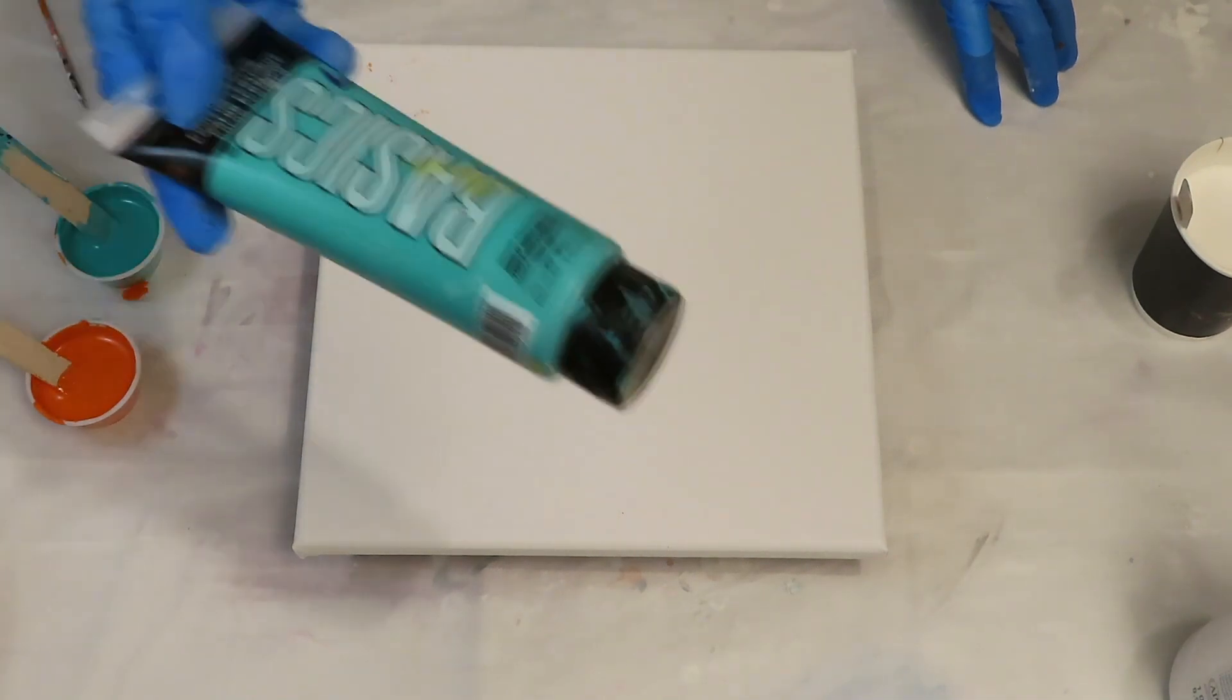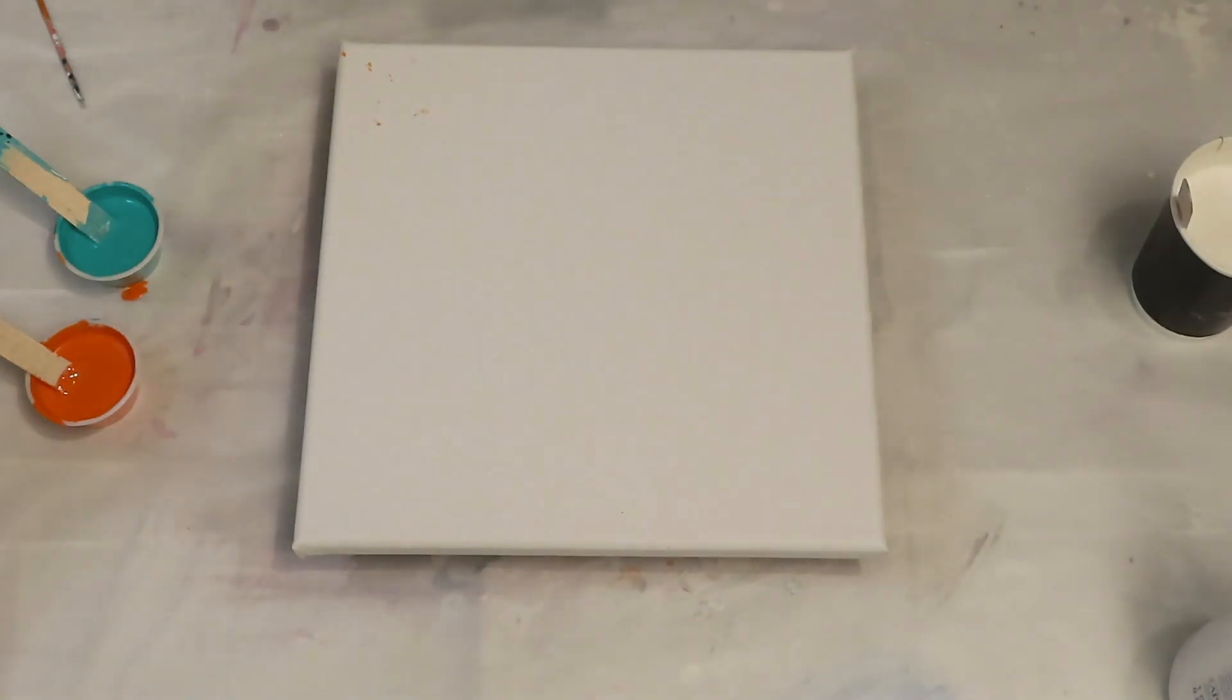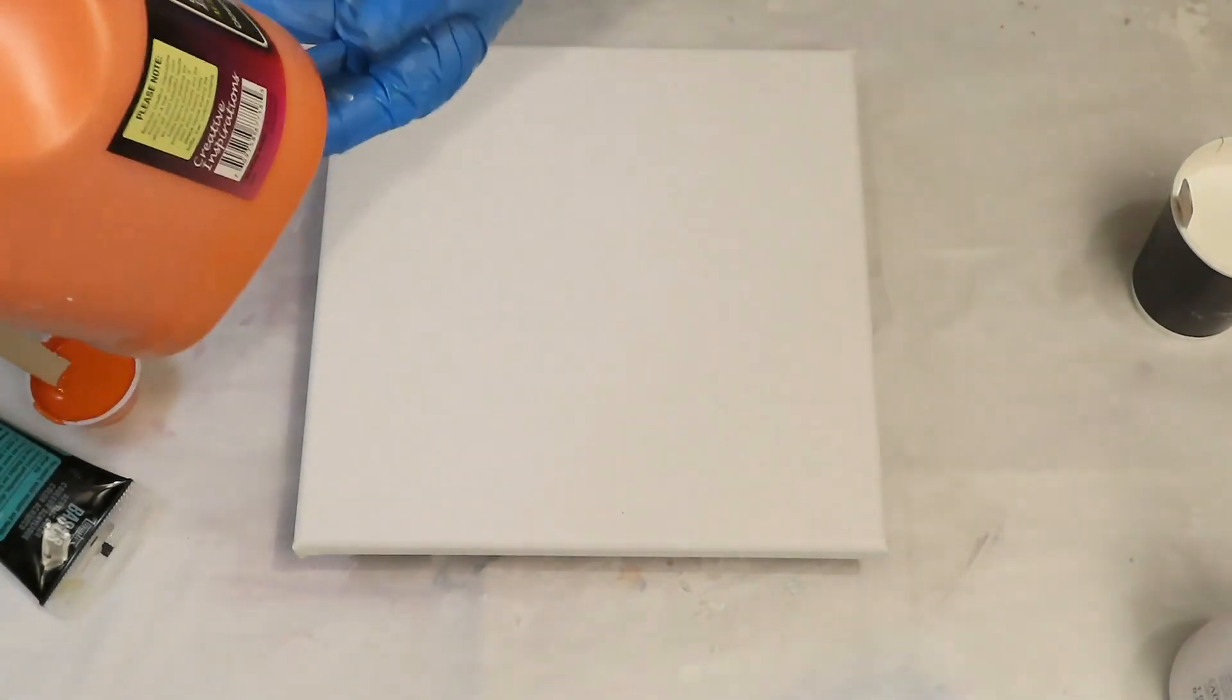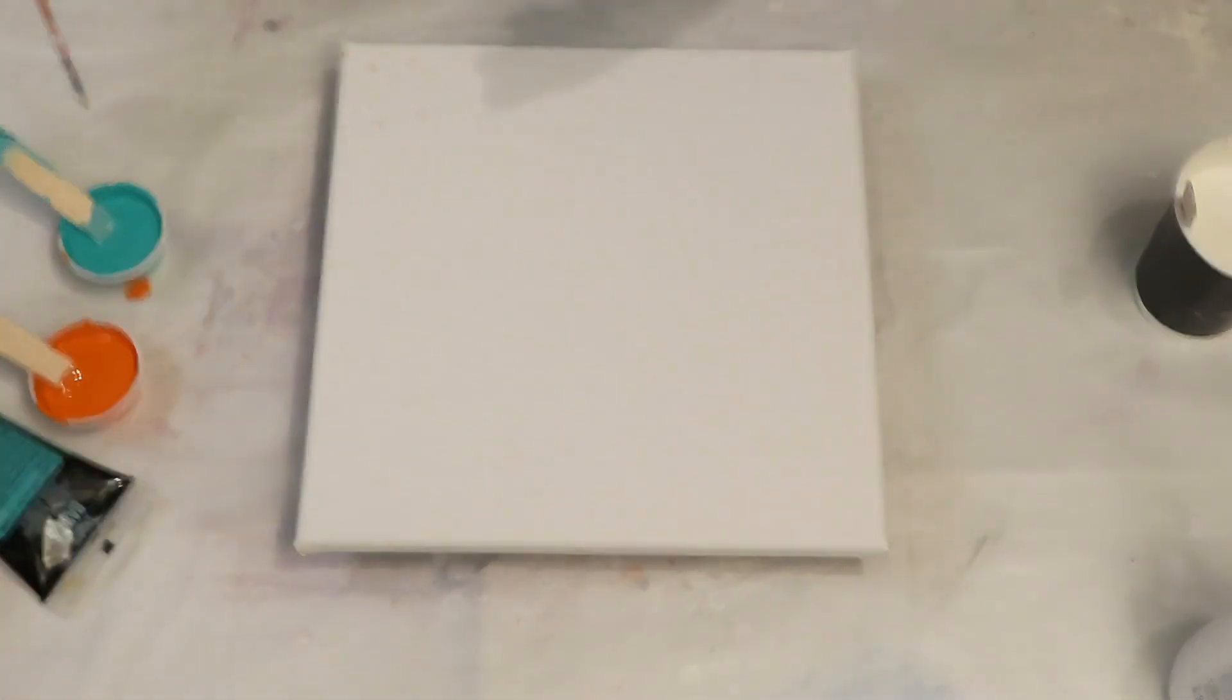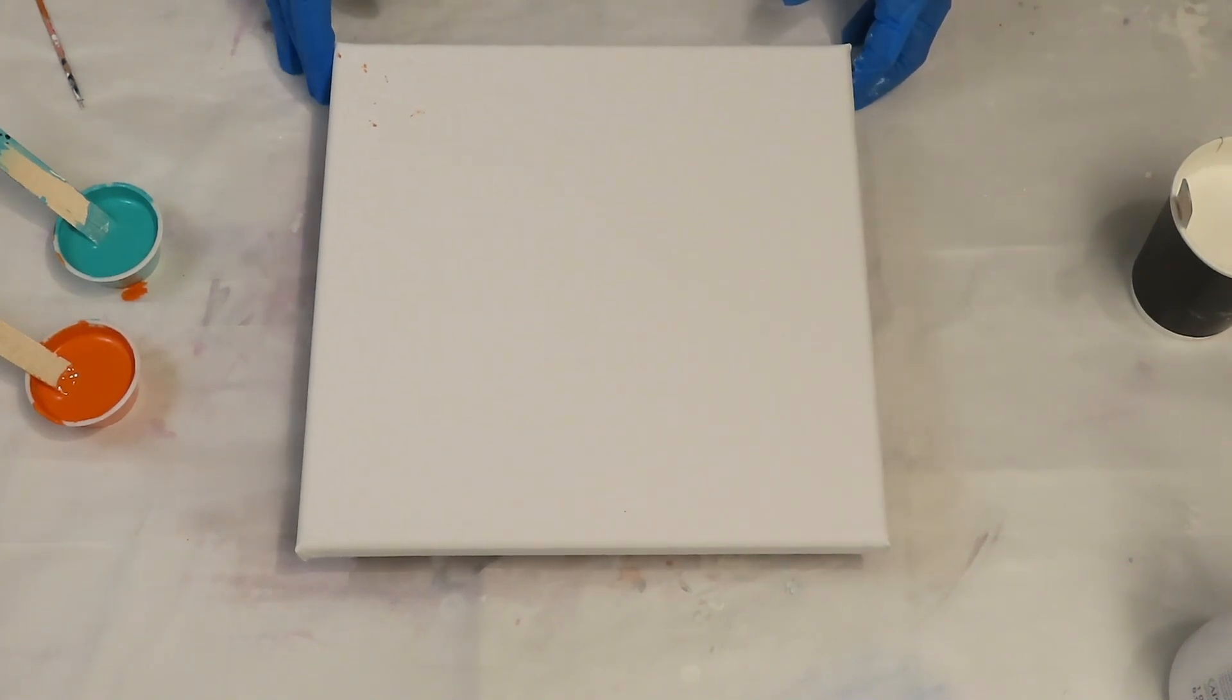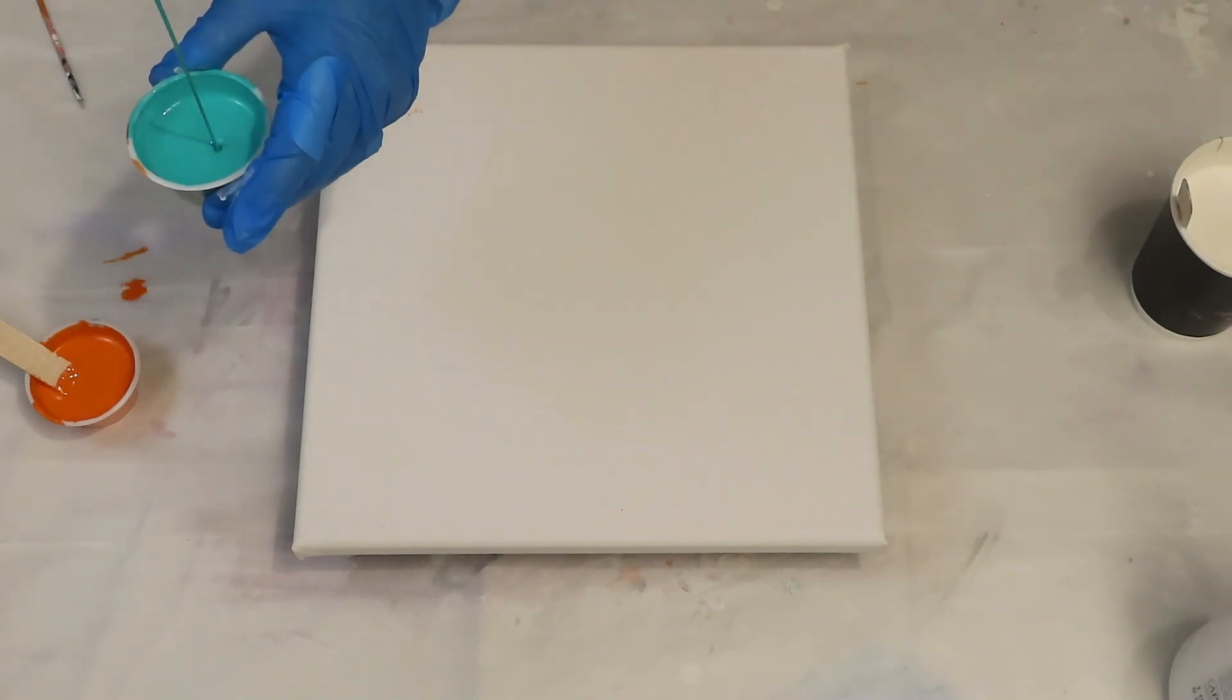Now that depends on how thick your paints are. These paints are pretty thick, and so is the Creative Inspirations. So this is Creative Inspirations Cadmium Orange Hue, and then the Basics Bright Aqua Green. So if you have thinner paints, then you'll want to put less water to thin them down. But anyway, get them to that consistency, and we'll see how that goes.